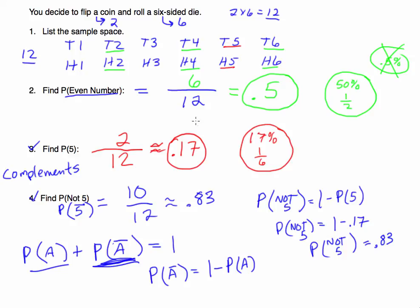Notice that in this example we again wrote out the sample space and looked for favorable outcomes divided by the total number of elements. As mentioned, we won't always be able to list the sample space, so we need to calculate probability in other ways. In the next module, we'll talk about more complicated events involving more than one experiment or trial.